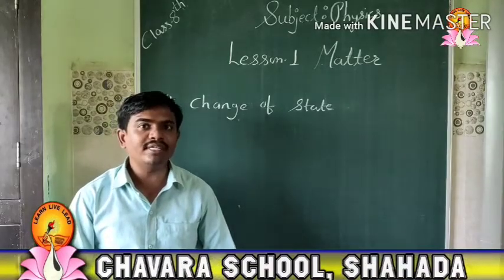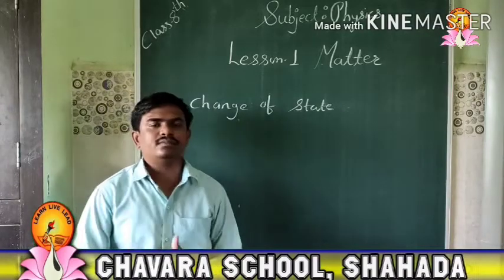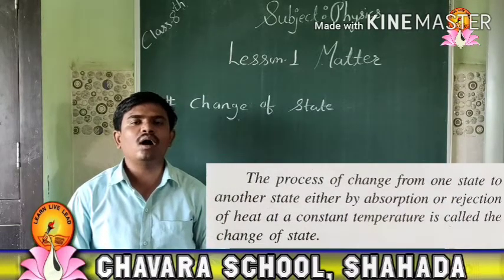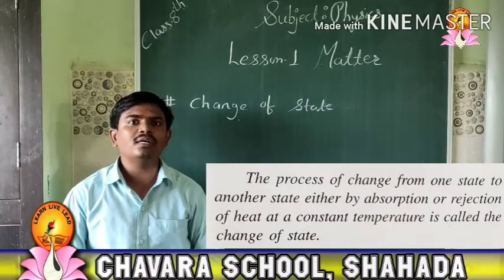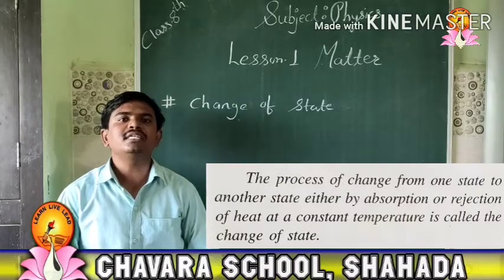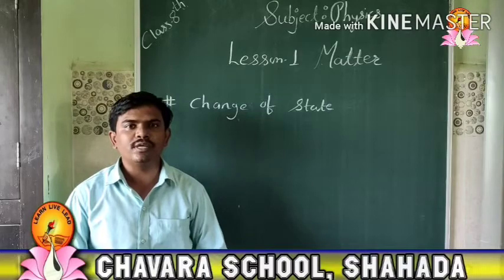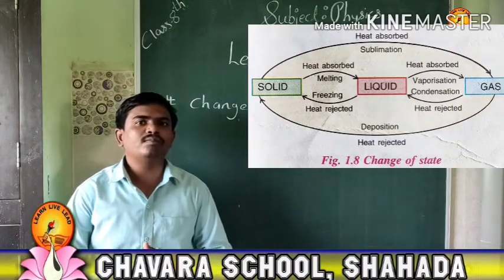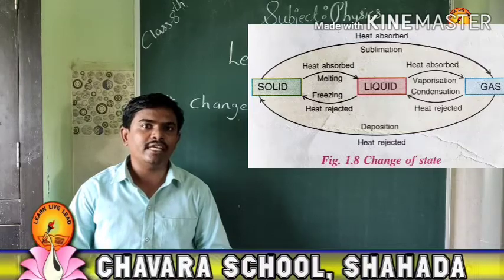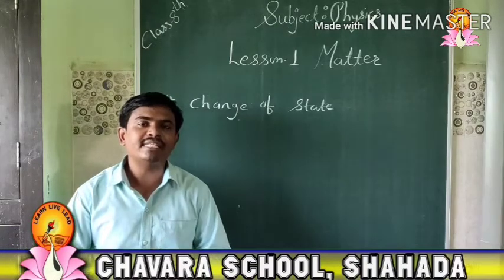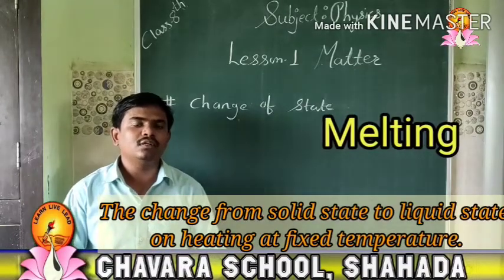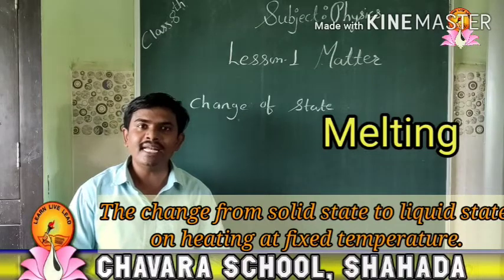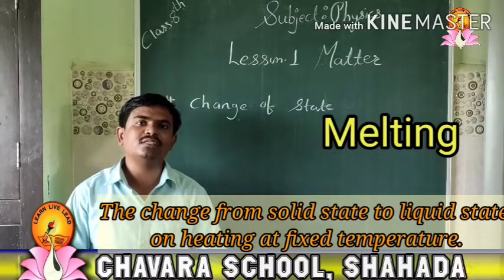Now students, I will teach you change of state. The process of change of one state to another state by absorption or rejection of heat at constant temperature. As you can see in this image, the change of solid state to liquid state, and liquid to gaseous state. Melting: the process of change of solid state to liquid state on heating at constant temperature is called melting.